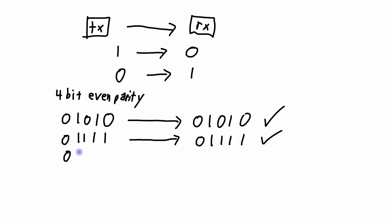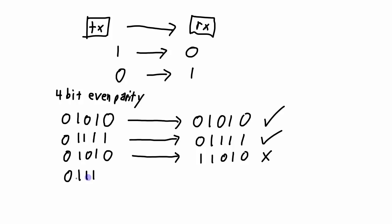If the data is again 0, 1, 0, 1, we add a parity bit of 0. But let's say a bit error occurs in the first bit, so what actually gets received is 1, 1, 0, 1, 0. The receiver counts three ones, which is not even. So the receiver knows something went wrong with that chunk of data — it doesn't know what, just that something is wrong — and it can ask the transmitter to retransmit. Similarly, if 0, 1, 1, 1 is transmitted with parity bit 1, but the receiver gets 0, 1, 1, 0, 1, it sees an odd number of ones in an even parity system and asks for retransmission.